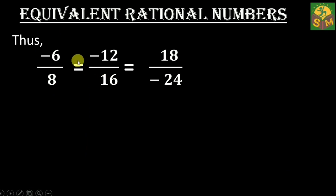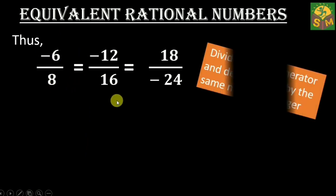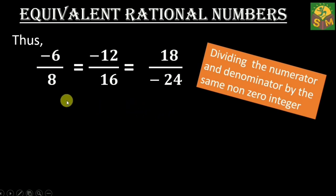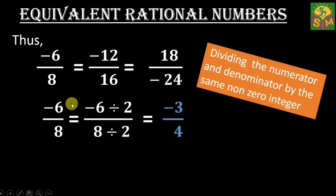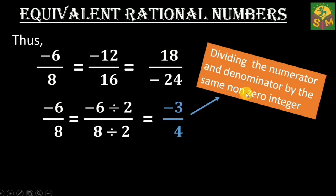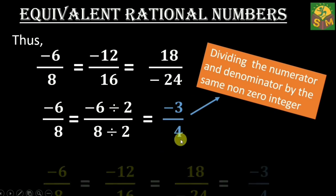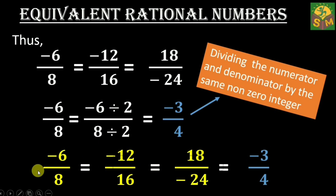Similarly, we can divide the numerator and the denominator of a rational number by the same integer to get another rational number equal to the given one. Here, for negative 6 over 8, dividing negative 6 and 8 by 2 gives us negative 3 over 4. This rational number is equal to the previous three rational numbers. Such rational numbers that are equal to each other are said to be equivalent to each other.